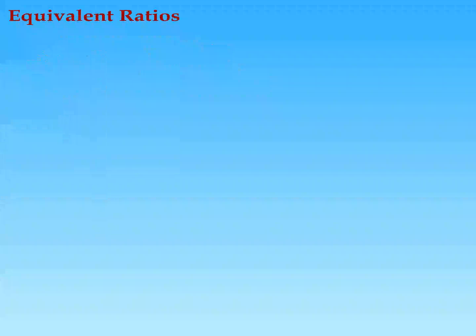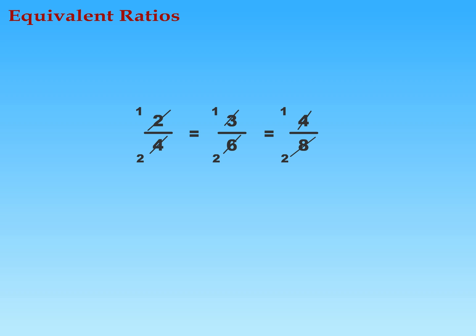Equivalent ratios are similar to equivalent fractions. We know that 2 over 4, 3 over 6, and 4 over 8 are the same, as all these fractions are equal to 1 over 2. Similarly, 2 is to 4, 3 is to 6, and 4 is to 8 are the same, as all these ratios are 1 is to 2 in their simplest form.